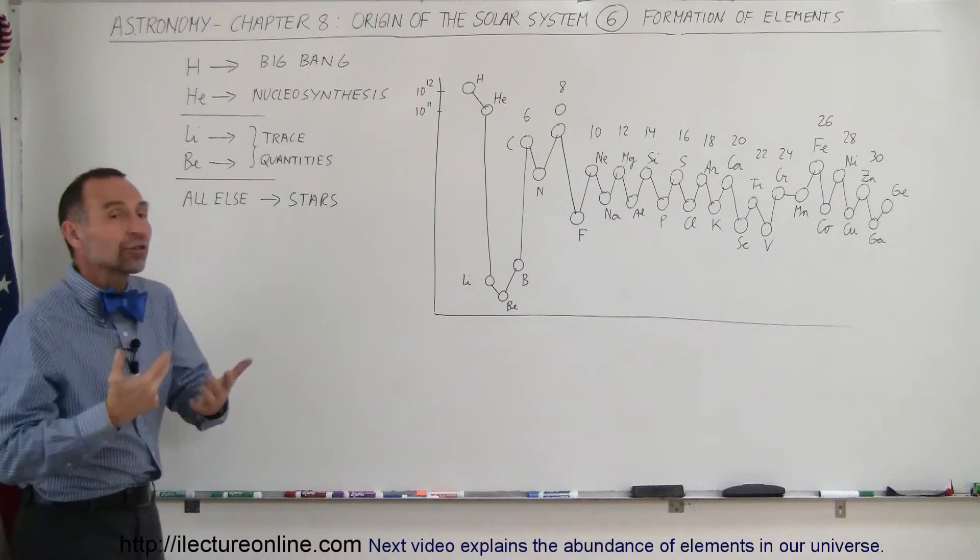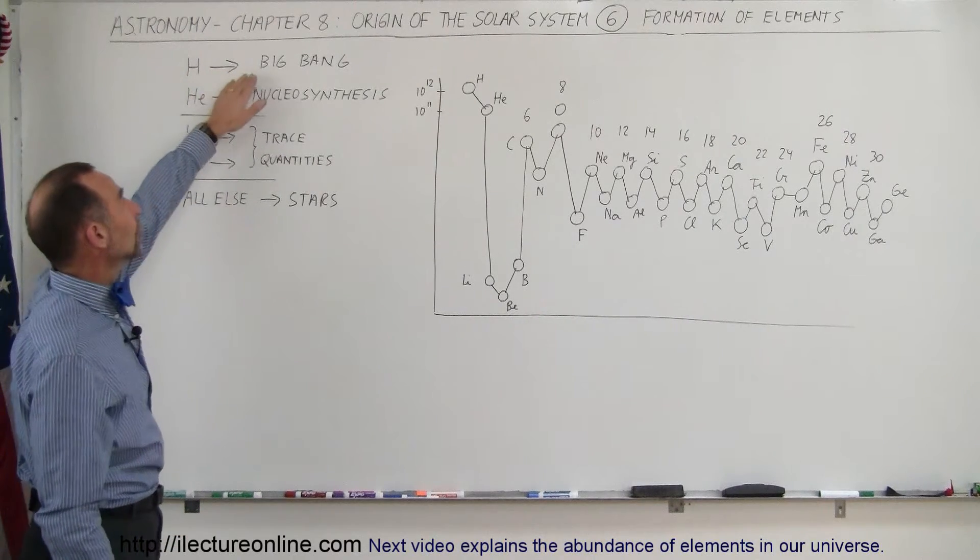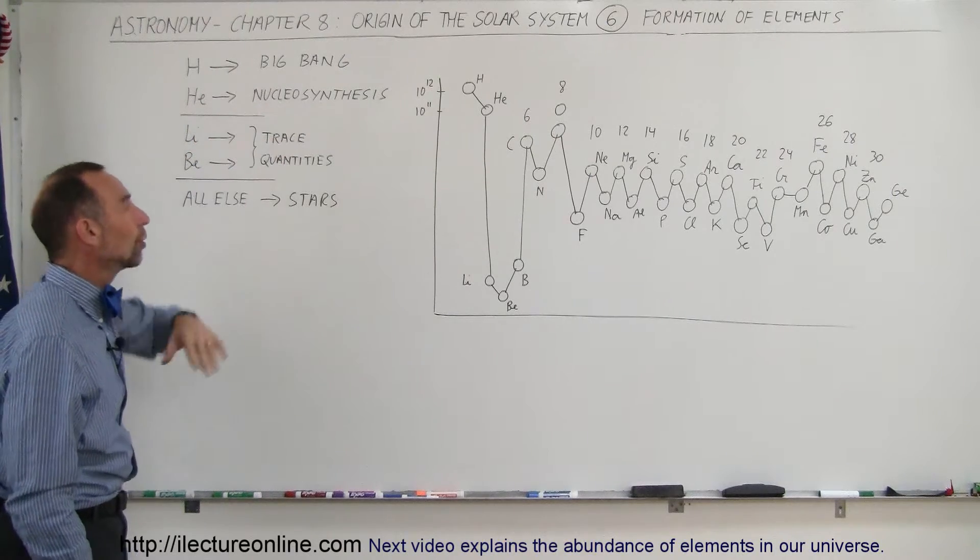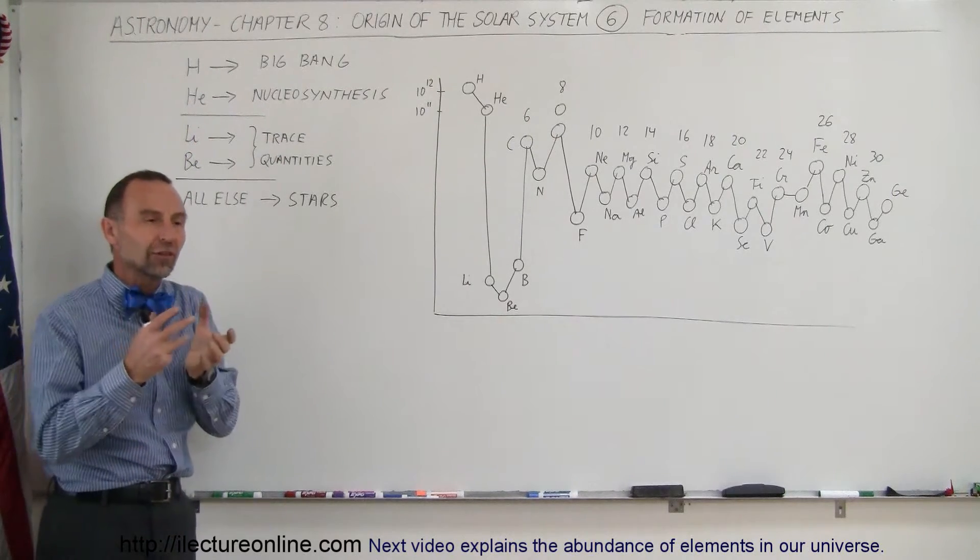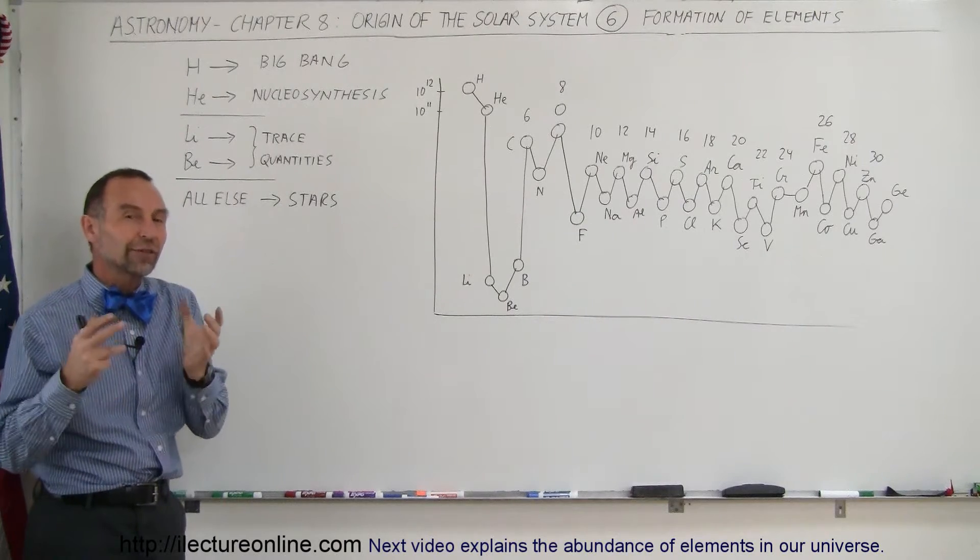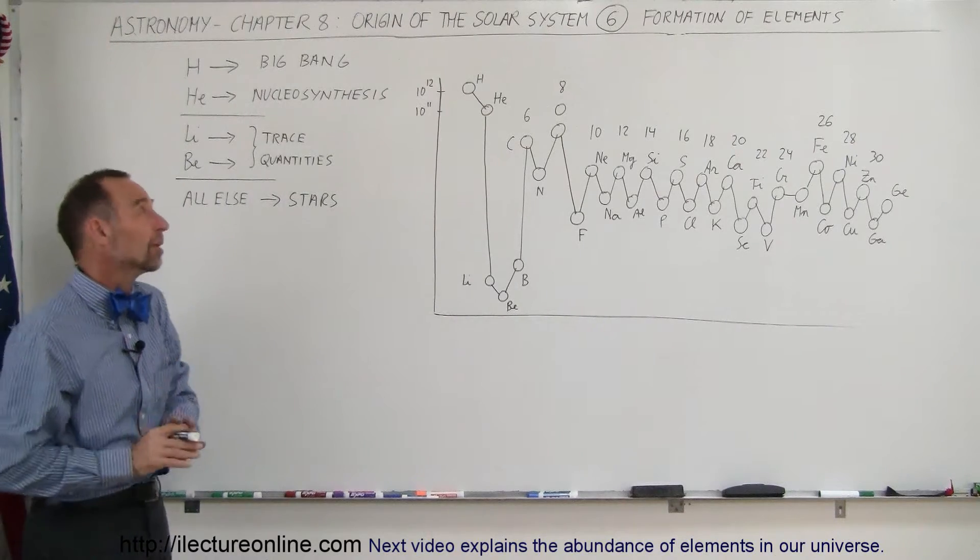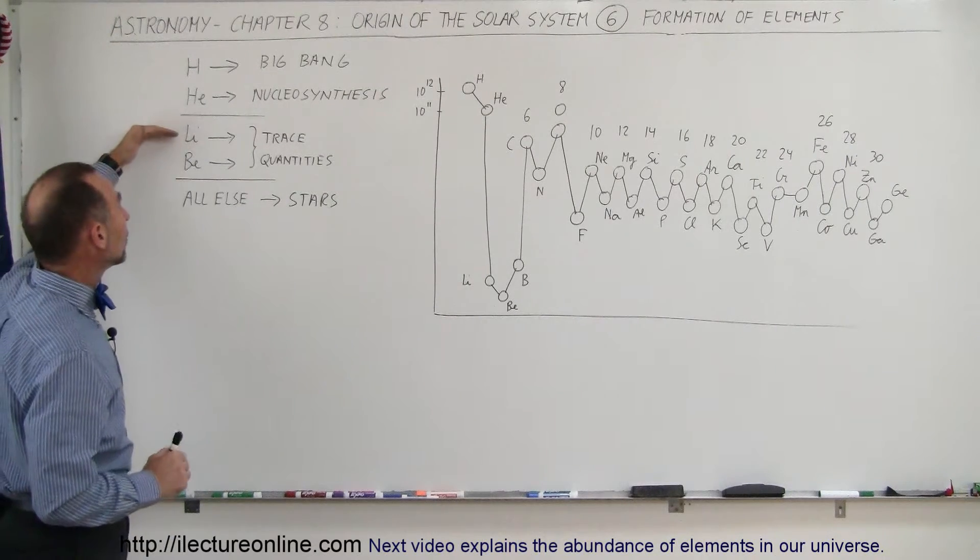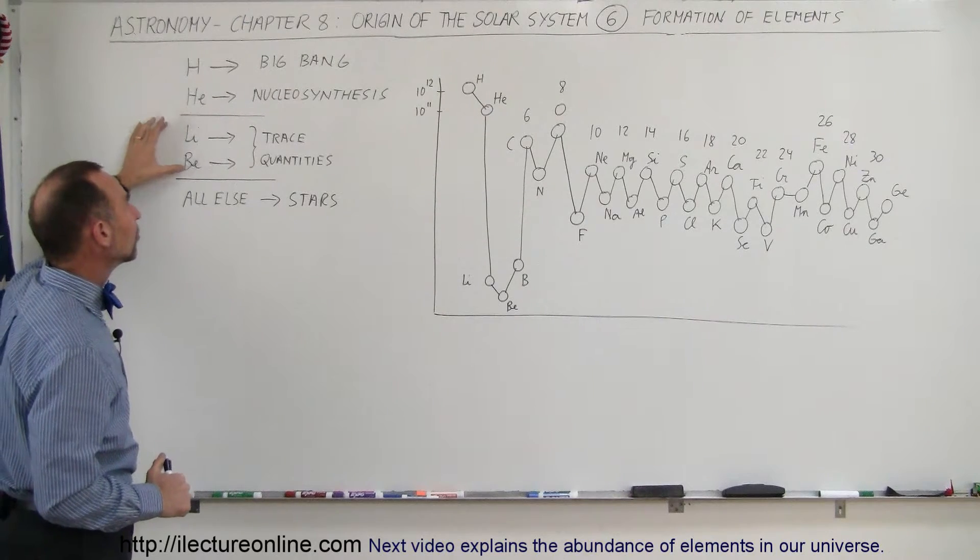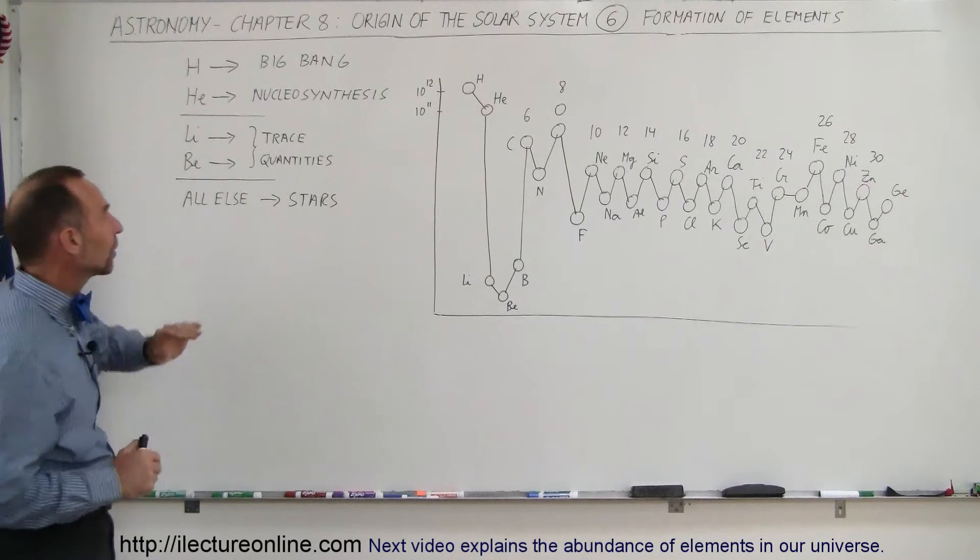Where do all elements in the universe come from? Well, to begin with, hydrogen came from the very beginning universe during the Big Bang and the helium shortly afterwards during what we call the nucleosynthesis when the universe was so hot that it fused a quarter of all of its hydrogen into helium and it happened in a very short period of time, estimated to be about 20 minutes. After that, we recognized that lithium and beryllium were some trace elements that were also cooked up during this nucleosynthesis period.